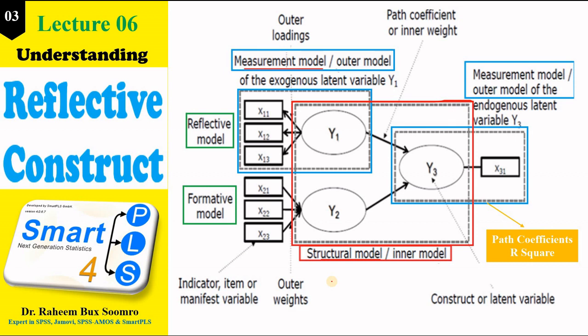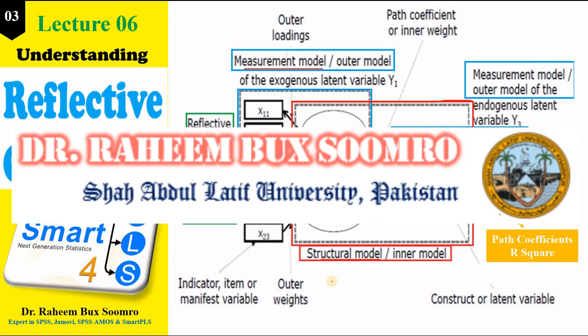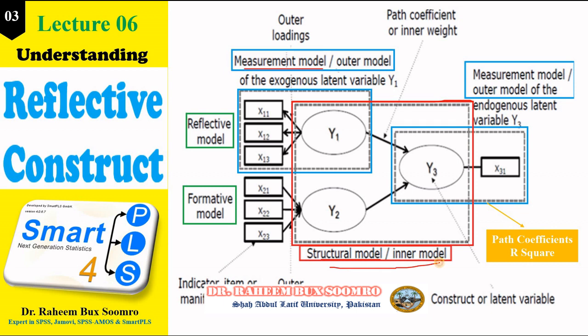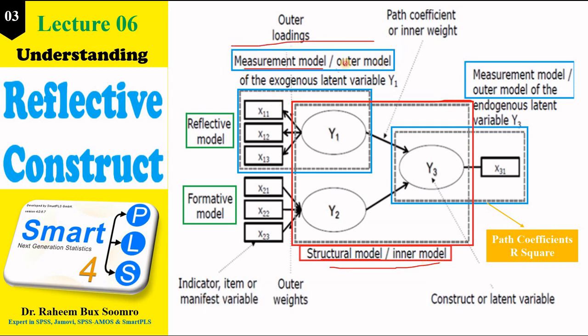Whenever we analyze any model in SmartPLS, there are always two parts: one is the structural part, also called the inner model, and the other is the measurement model or outer model. In the structural model we are working in path analysis, while in the measurement model we are checking the validity and reliability of the reflective model and the formative model.